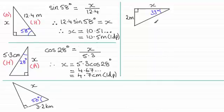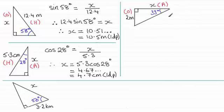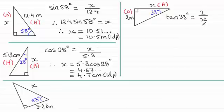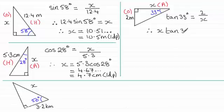Moving to the third example — label the sides. The side we want, X, is the adjacent side, label it A. The side we're given is the opposite side, label it O. The trigonometric ratio connecting these two is the tangent ratio. So tan(33°) = opposite over adjacent. Be careful: that's 2 divided by X. Notice X is in the denominator here, unlike the previous examples. So we multiply both sides by X: X × tan(33°) = 2.